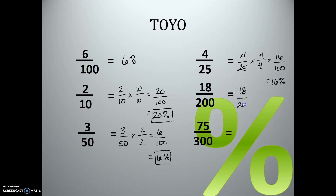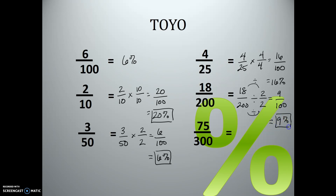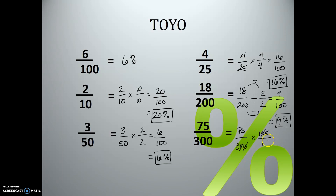Next: 18 over 200. Using method one, divide by 2 over 2, which simplifies to 9 over 100, so that's 9%. Finally, 75 over 300 using method two: multiply by 100 over 1 and cross-cancel by dividing numerator and denominator by 100. We get 75 divided by 3, which equals 25 over 1, or 25%.